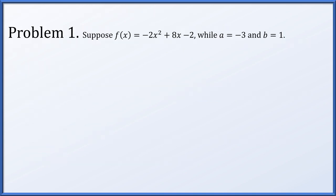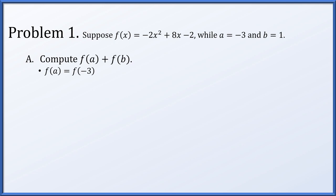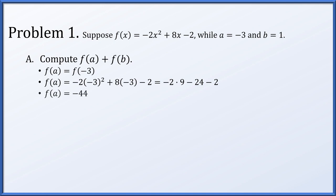Problem one. Suppose f of x is equal to negative 2x squared plus 8x minus 2, a is equal to negative 3, and b is equal to 1. First, we're asked to compute f of a plus f of b. Since a is equal to negative 3, f of a is f of negative 3. Now f of x is negative 2x squared plus 8x minus 2, so f of a is negative 2 times negative 3 squared plus 8 times negative 3 minus 2, which after computation resolves down to negative 44.